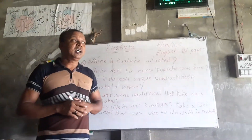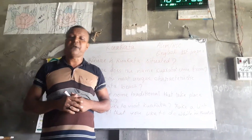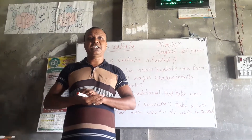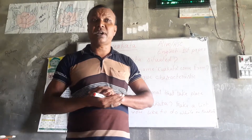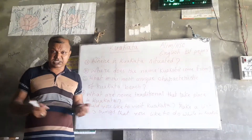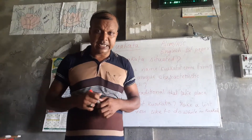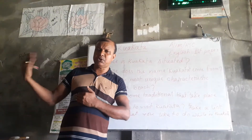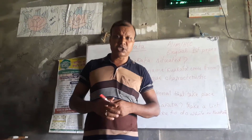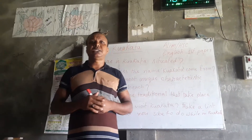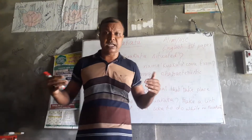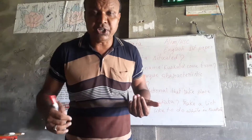Kuwakata is called the Daughter of the Sea, that means Sagorduhita. It is located at the southernmost tip of Bangladesh. It is situated in Kolapara Union, Latachapali Union, Kolapara Police Station, and in Patuakhali District. It is 70 kilometers from Patuakhali District headquarters and 320 kilometers from Dhaka.